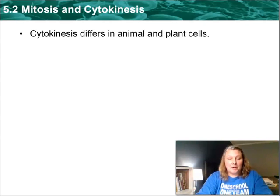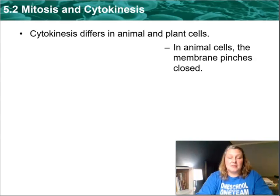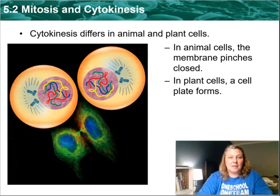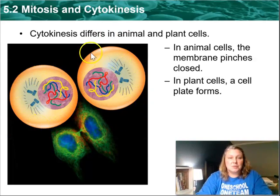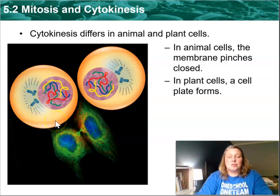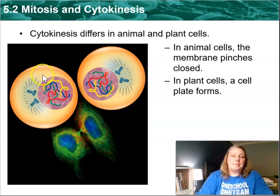Cytokinesis is not a part of mitosis, but it is the last step before the cell actually splits in half. In animal cells, the cell membrane is starting to pinch off and close. In plant cells, you have something called a cell plate forming — this will become the cell wall that plant cells have. Here you see two distinct new cells after cytokinesis, each with a nucleus containing identical DNA, centrioles, and spindle fibers. During mitosis you have nuclear division, but cytokinesis helps split everything else in half — you'll have mitochondria, endoplasmic reticulum, Golgi bodies, and lysosomes in each one.